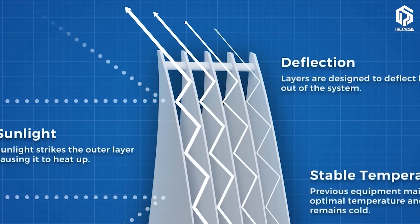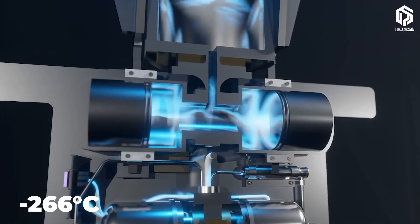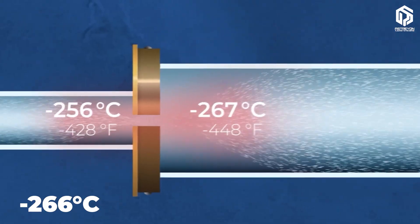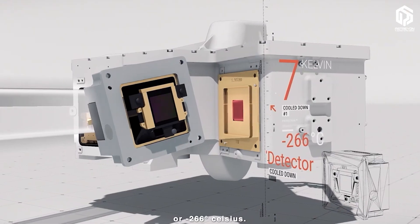Though the MIRI instrument is even colder, reaching about 7 Kelvin minus 266 degrees Celsius, with an active cooler to detect longer infrared wavelengths.